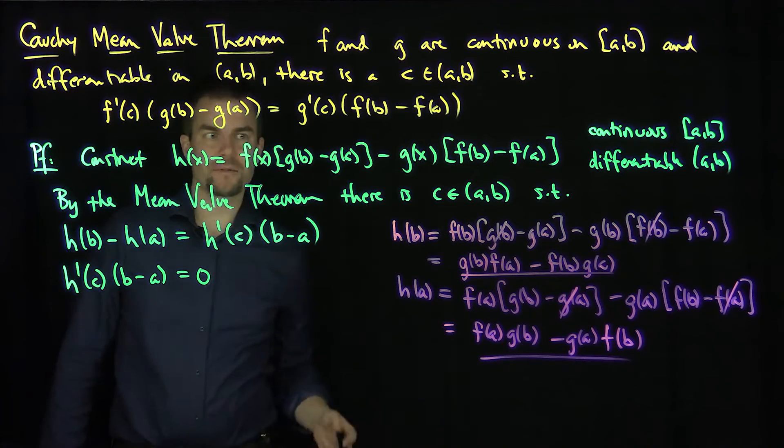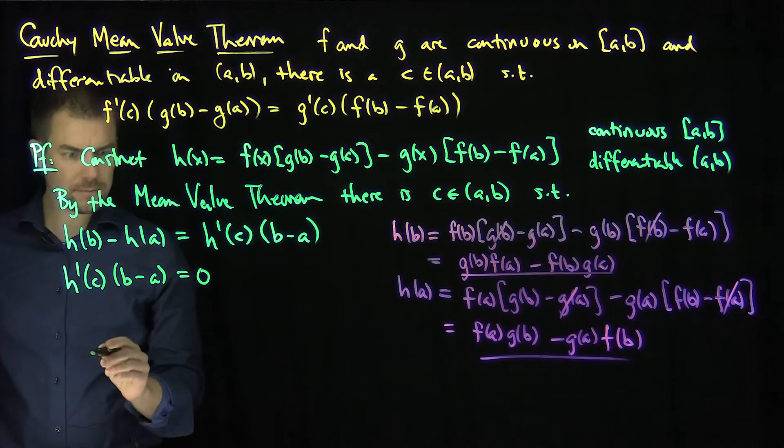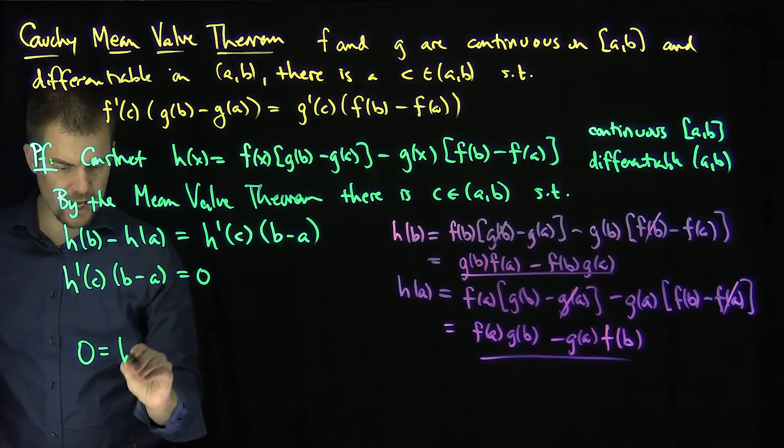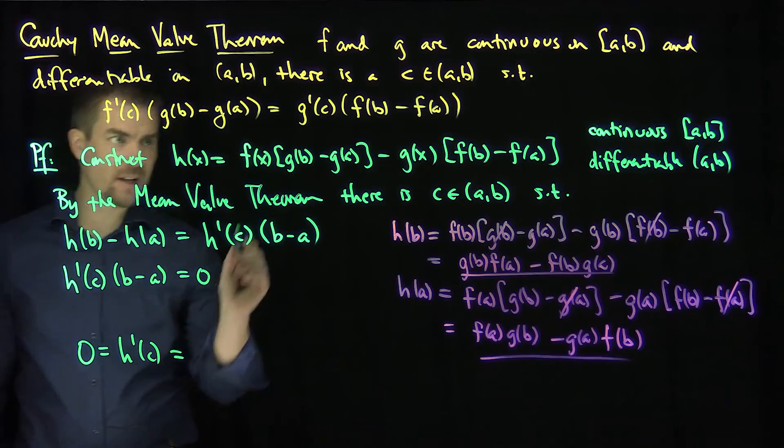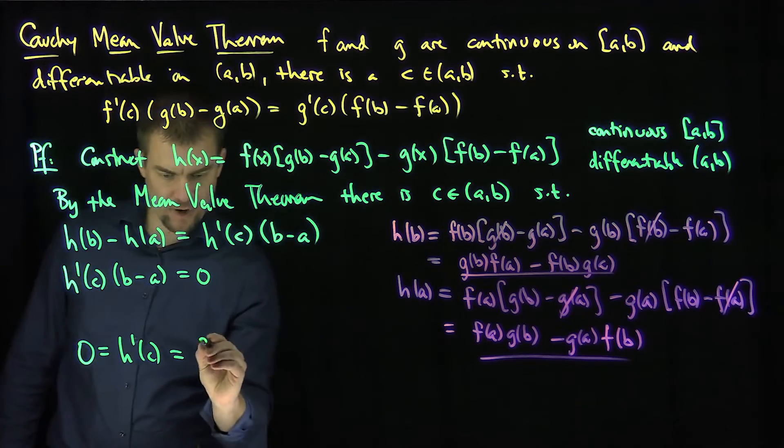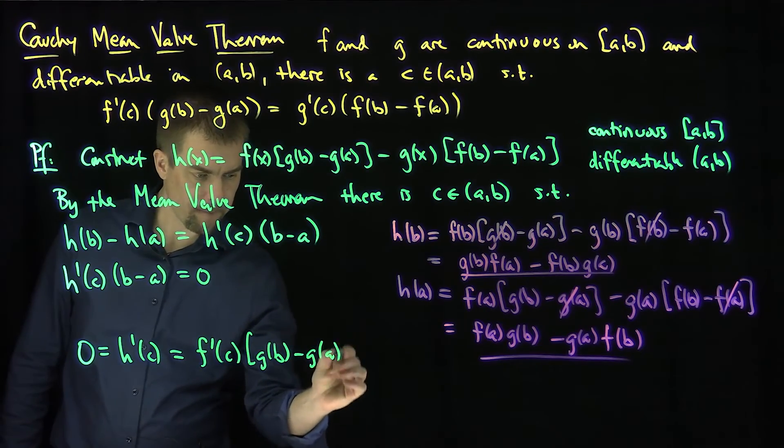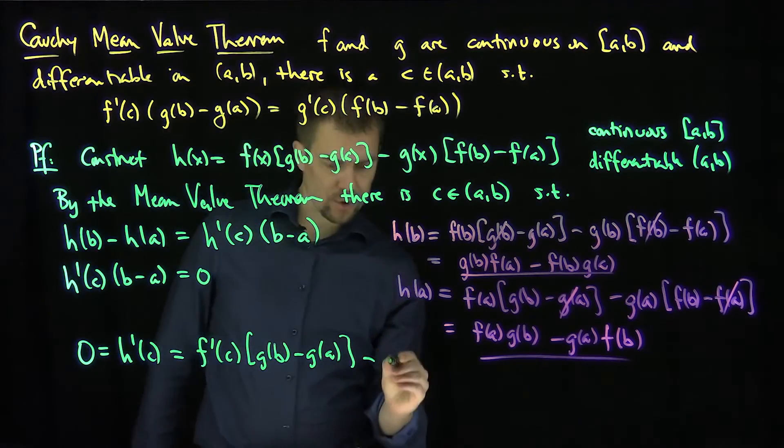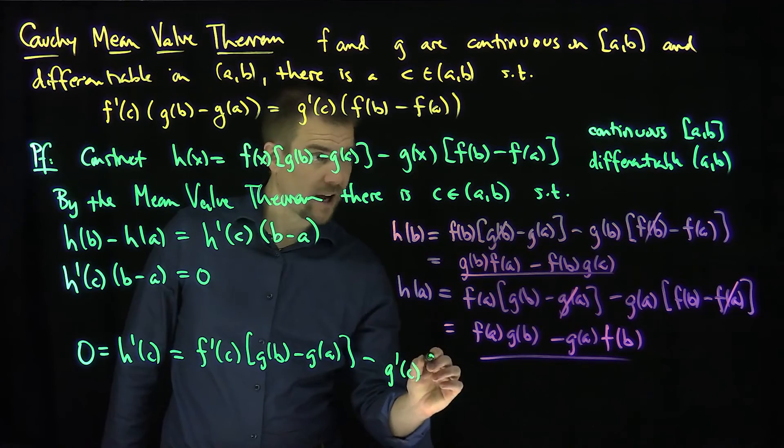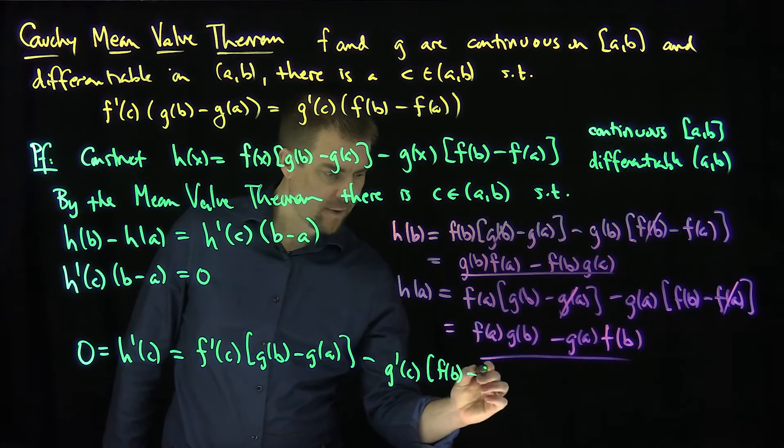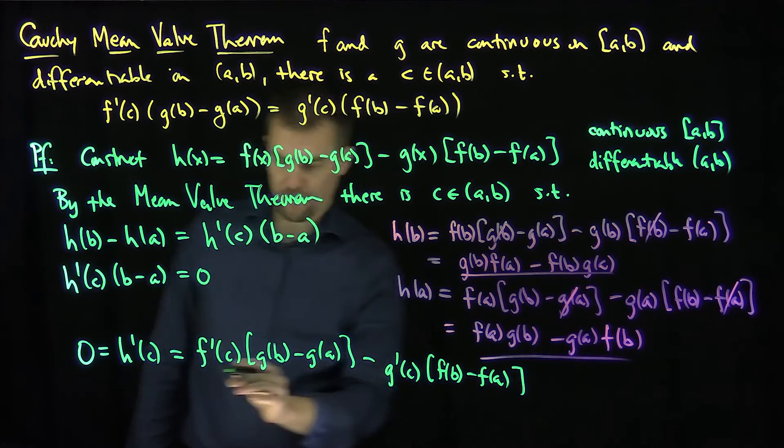But what is h'(c)? h'(c), which is zero. Well, what's that going to be? That's a constant. So it's going to be f'(c) times [g(b) - g(a)]. And then minus what? Then minus g'(c) times [f(b) - f(a)]. And therefore, this is equal to this.